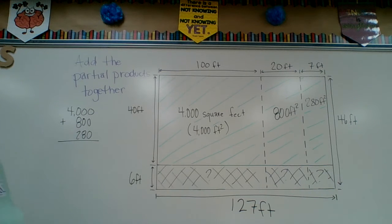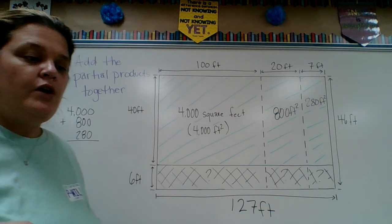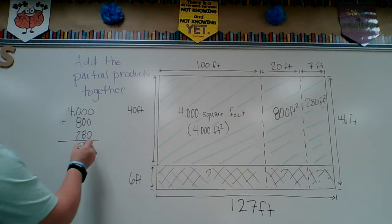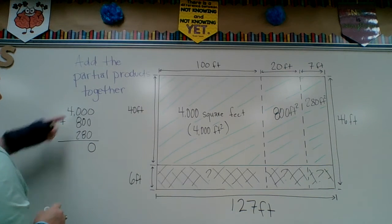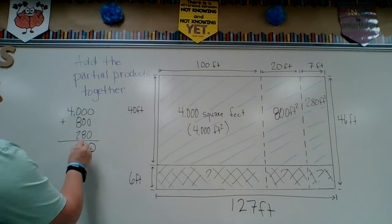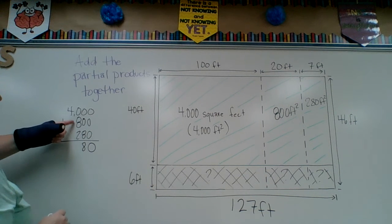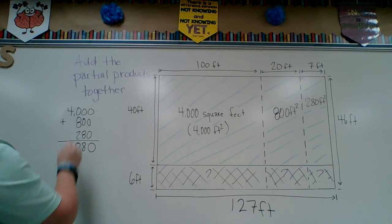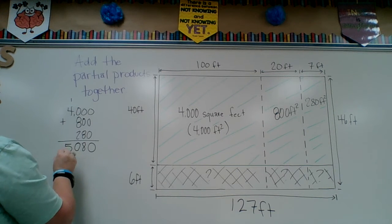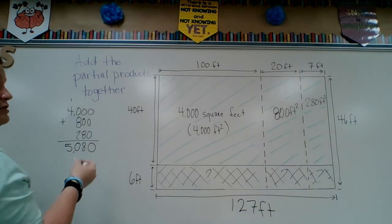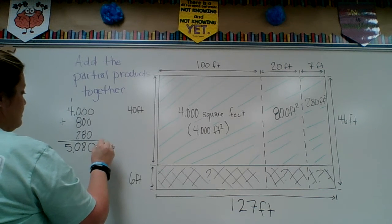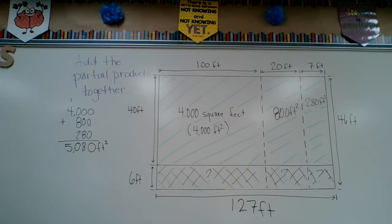So let's add that up. Zeros equal zero. 0 plus 0 plus 8 equals 8. 2 plus 8 is 10, so put the zero here and carry my one — that's 5,000. So 5,080 square feet. That's the green grassy section.